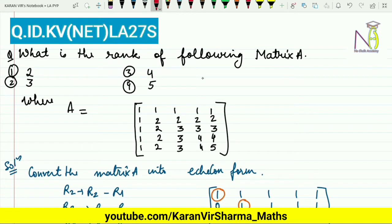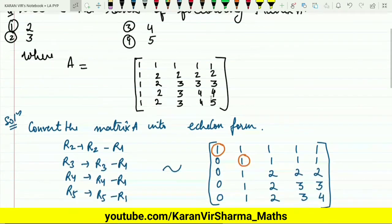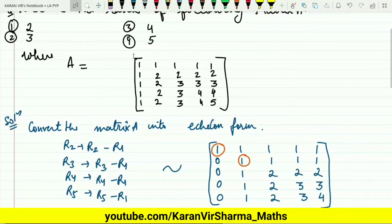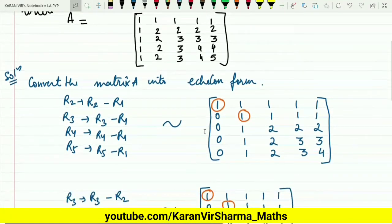The question is: what is the rank of the following matrix A? The matrix is given, and the options are 2, 3, 4, and 5. In order to check the rank of a matrix, we need to convert this matrix into echelon form.